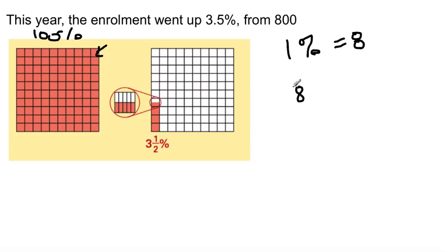So 3 times 8 plus 8 plus 8. What's half of 8? 4. What do we got here? 8 and 8 is 16, 24, 28 students.